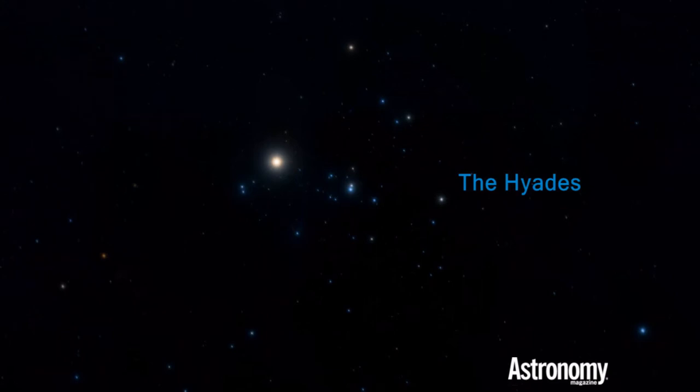Five members of this group are visible to the naked eye. In Greek mythology, the Hyades are sisters, the daughters of Aethra and Atlas, and half-sisters to the Pleiades. In 750 BC, the Greek poet Homer mentions the Hyades in his Iliad about the Trojan War.